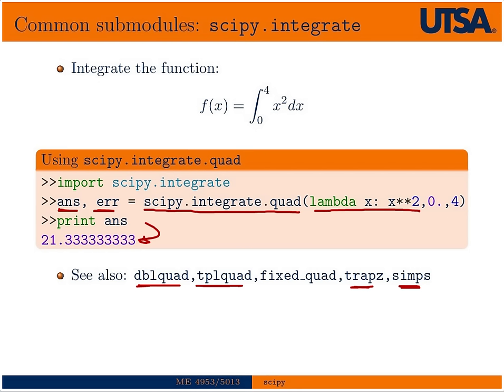It may seem clunky to have to do 'import scipy.integrate' and then call it with that namespace, but there are very good reasons for using these namespaces. As you become more familiar with object-oriented programming or Python, you'll see why — a function like 'quad' could be defined in multiple namespaces and operate in different ways depending on the data.